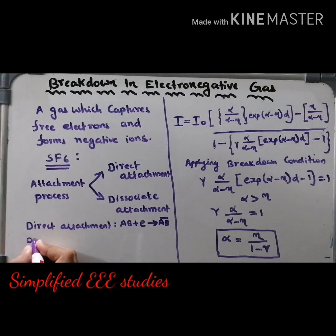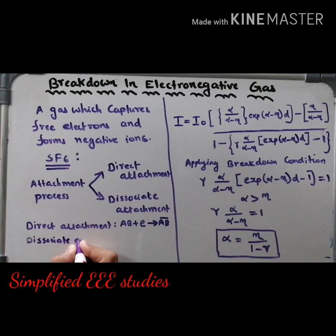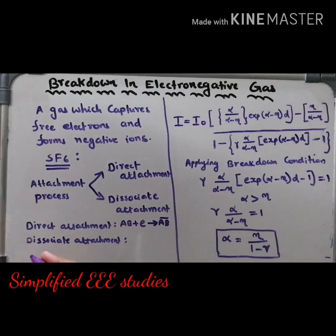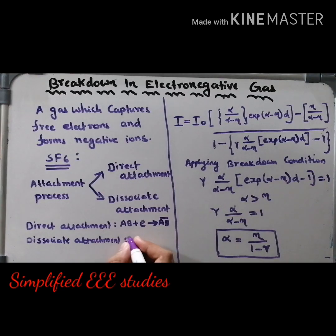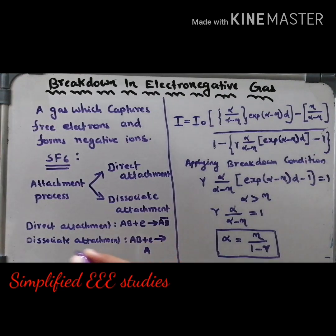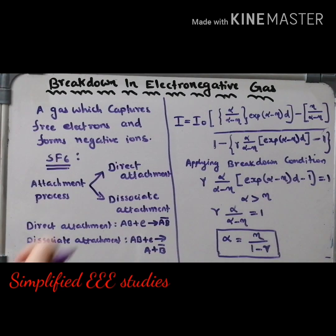In dissociative attachment, the splitting of the gaseous molecule into its constituent atoms occurs — just like a splitting, which can be written as A + B⁻. That is referred to as dissociative attachment. These are the two sub-processes related to the attachment process, and that is the main reason for dielectric breakdown.